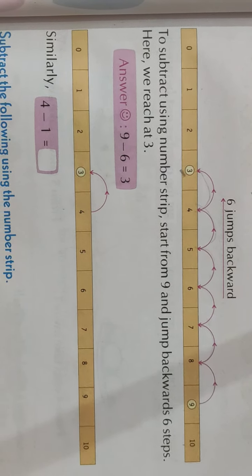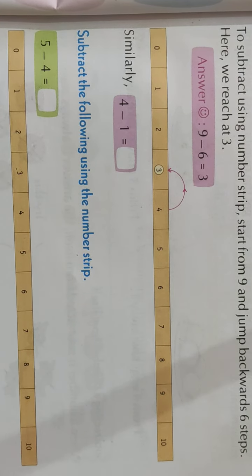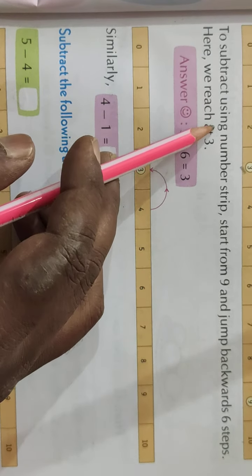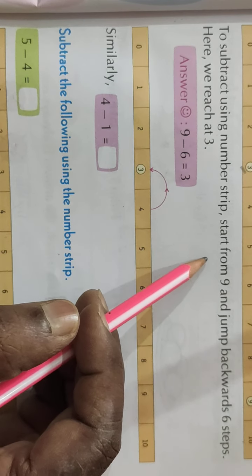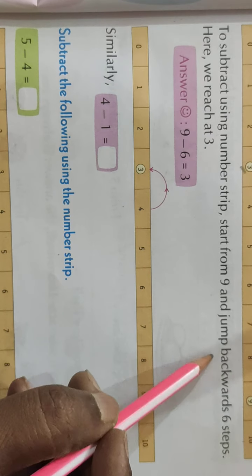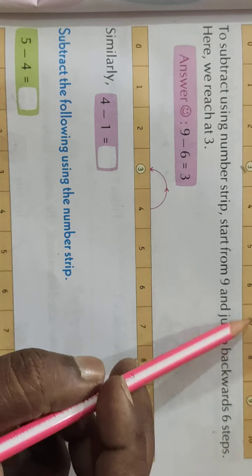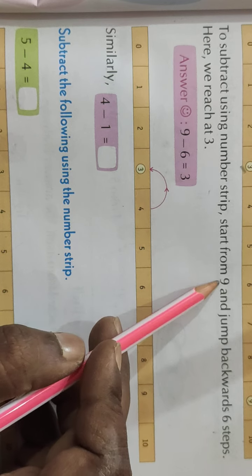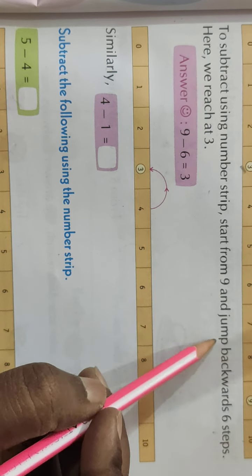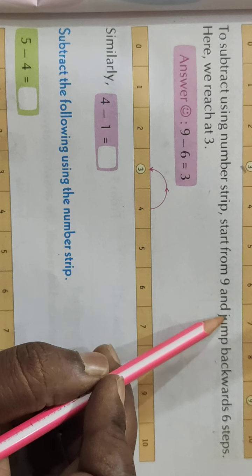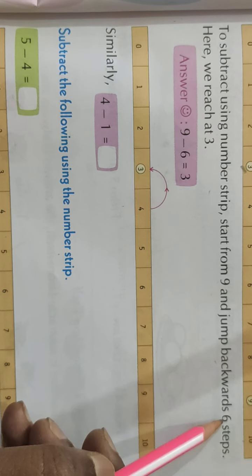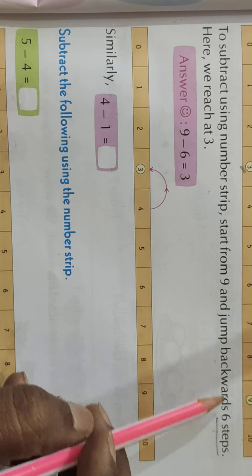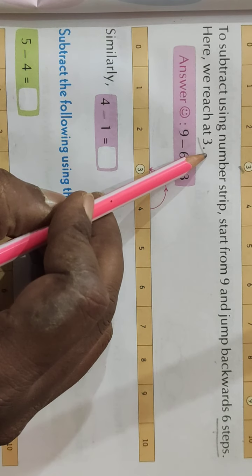Now again another example. ध्यान दीजिए. Subtract using number strip - starting from 9 and jump backwards 6 steps. हमने number strip का इस्तेमाल किया. शुरुआत 9 से की और jump backwards - पीछे की और 6 step कूदे. तब हम 3 पे पहुँचे.